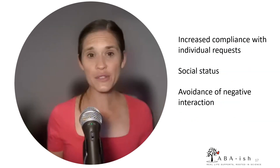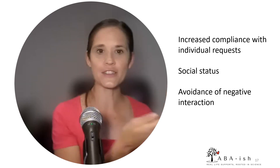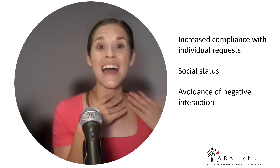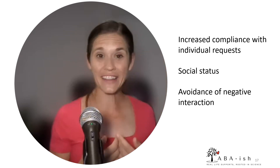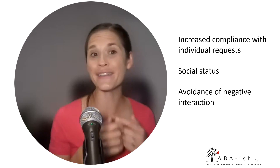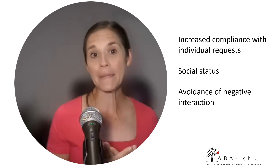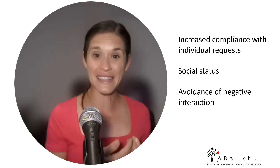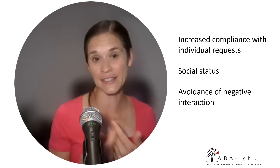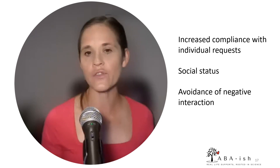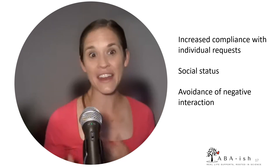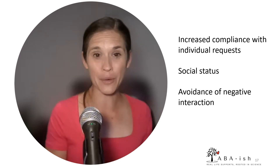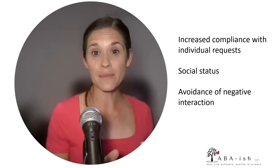So those are the three alternative functions: increased compliance with an individual's request — I engage in inappropriate behavior because it increases the likelihood you'll do what I ask either now or in the future; maintenance or increase in social status — which increases access to social reinforcers from peers; and avoidance of negative interactions — these behaviors serve the purpose of people not doing negative things to me in the future.